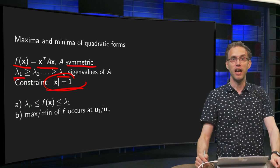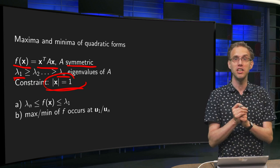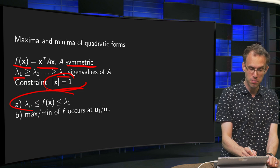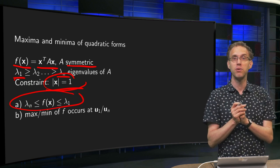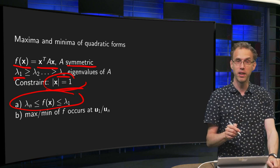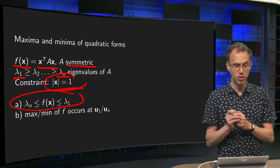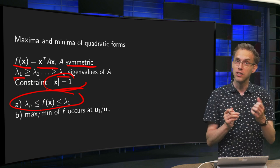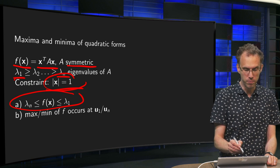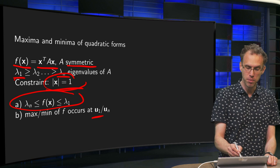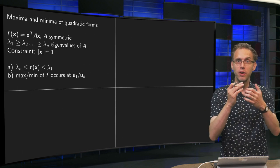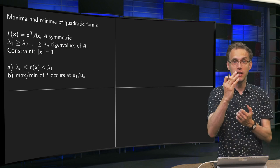Usually, if you have some general function f, you need Lagrange multipliers and a lot of computation. However, in this case it is a lot easier because we have a theorem that says f lies between the biggest and smallest eigenvalue — f is always smaller than lambda_1 and bigger than lambda_n. The theorem also tells you where to find the optimum: the maximum occurs at eigenvector u₁ and the minimum occurs at eigenvector u_n.